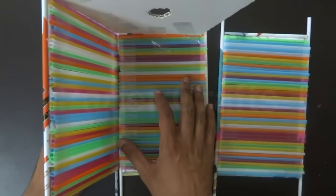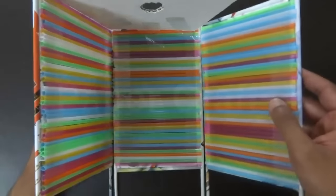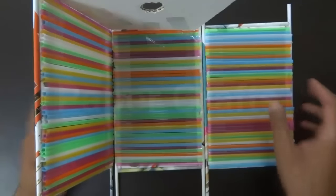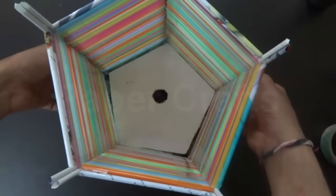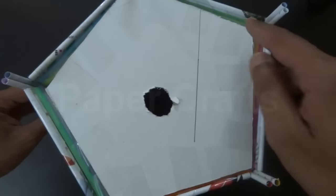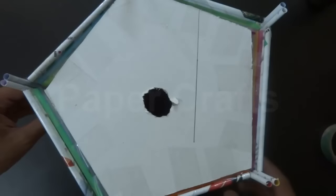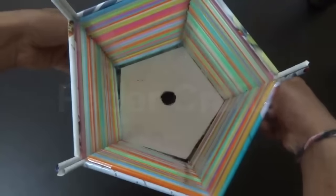After we have attached all the 5 pieces to the pentagonal base, this is how the entire lampshade looks like. All the 5 pieces connected to the pentagon. This is the bottom side.